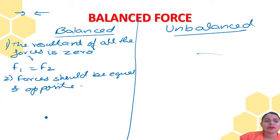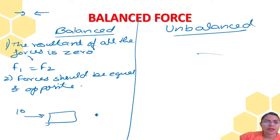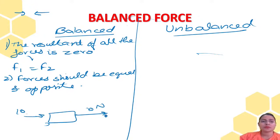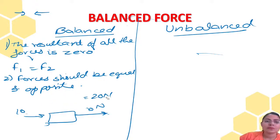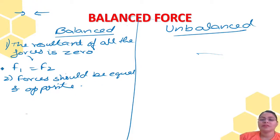If the forces are in the same direction — for example, a box with 10 Newton from one side and 10 Newton from the same side — they will add up: F1 plus F2 equals 20 Newton. That won't be called a balanced force. A balanced force is one where the inward force is always equivalent to the outward force, so the resultant force at that point is zero.